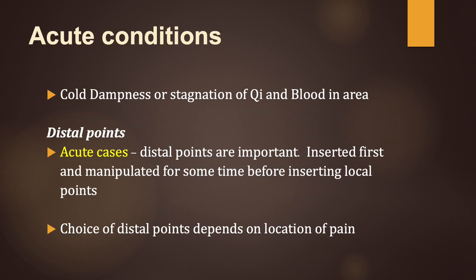Acute conditions are due either to cold dampness or to stagnation of chi and blood in the area. In acute cases, distal points are particularly important. They are inserted first and manipulated for some time before inserting the local points. The choice of distal points depends on the location of the pain.